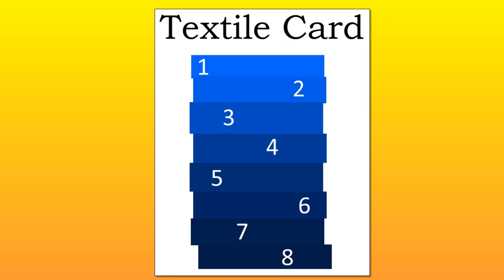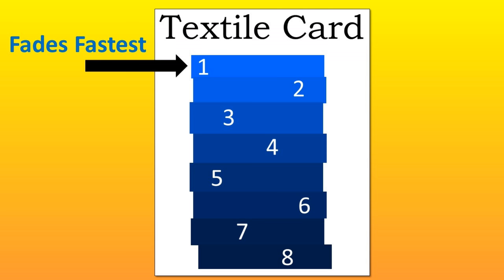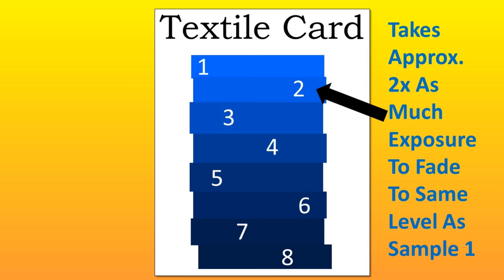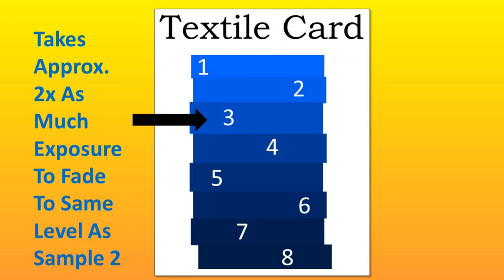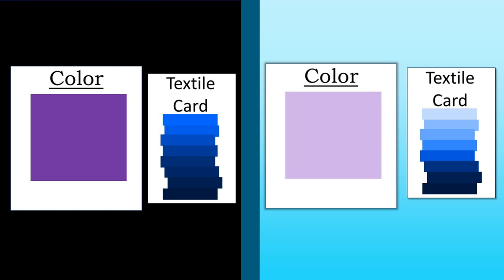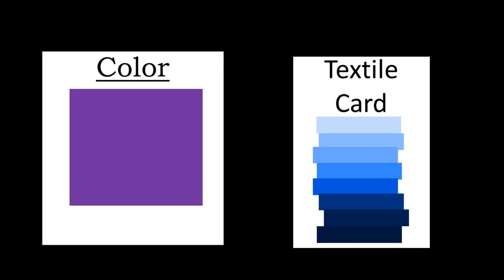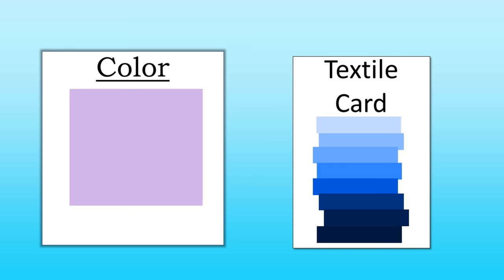Along with both samples, testers include what's called a blue wool fading card or textile fading card. This card includes eight wool swatches that are dyed blue. Each swatch is dyed to a different level that's designed to fade after exposure to a known amount of light. The first swatch fades the fastest. The second swatch takes roughly twice as much exposure to fade to the same level as the first, the third takes roughly twice as long as the second, and so on. After testing is completed, the sample exposed to light is compared to the swatches on the blue wool card to see which swatch closest matches the level of fading. The control colorant and blue wool card kept in the dark shouldn't show any signs of fading at all. If the sample is faded to the same level as swatch two, it's given a rating of two, or poor.